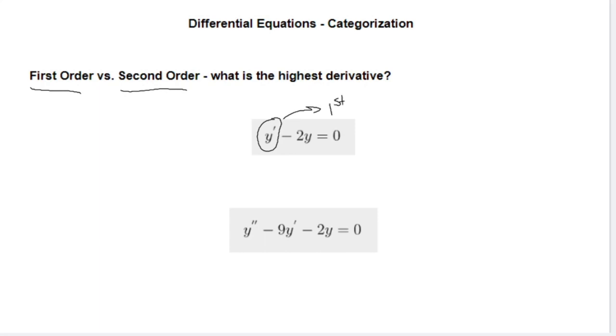If we look at our second equation, we have a y prime, but we also have a y double prime. So this is our second derivative. This is a second order differential equation.